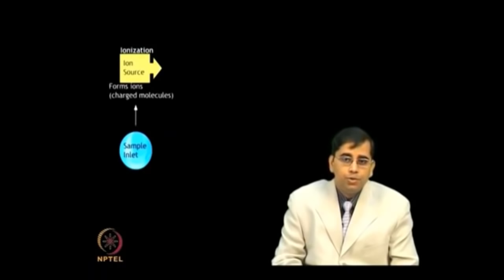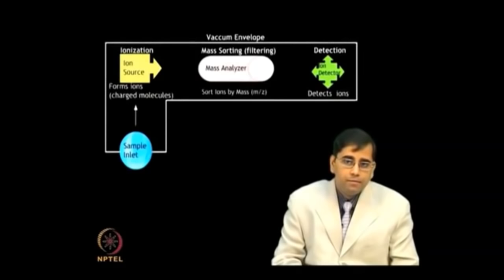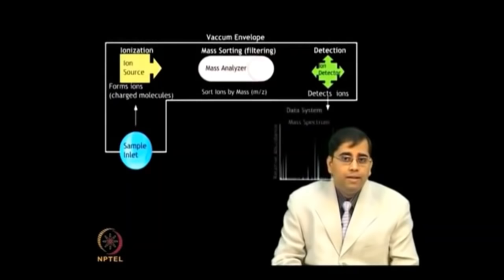The basic components of mass spectrometry involve: a sample inlet to transfer sample into the ion source; an ionization source which converts neutral sample molecules into gas-phase ions; a mass analyzer to separate and analyze the mass of ionic species; a detector which measures and amplifies the ion current of mass-resolved ions; and a data system to process and analyze data.